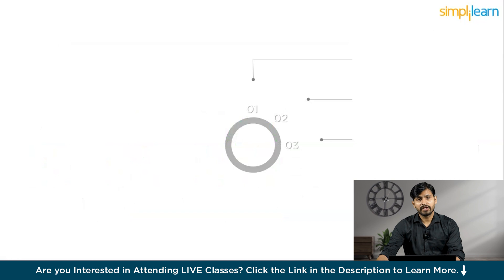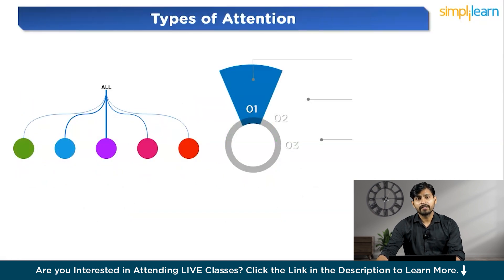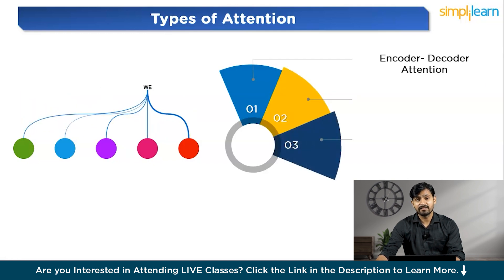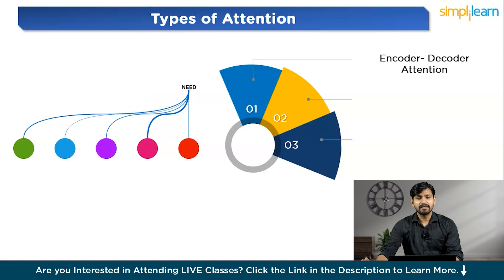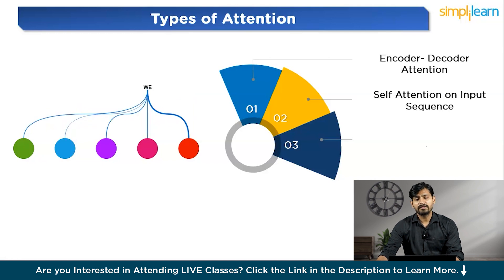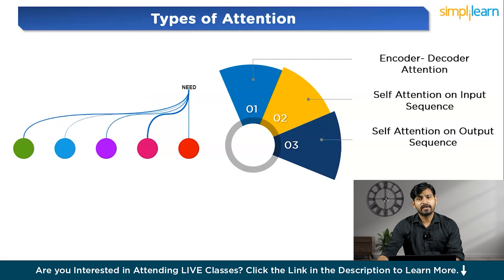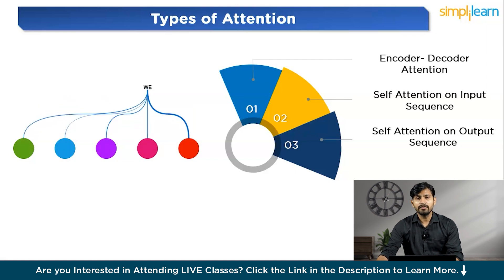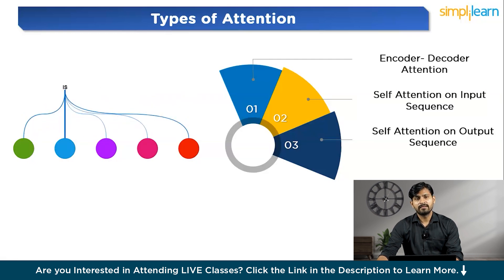Let us understand the three types of attention in Transformers. The first is encoder-decoder attention, which focuses on the relationship between the input (an English sentence) and the output (a translated French sentence). It helps the model align input and output, making translation more accurate. The second is self-attention on the input sequence, which attends to all words in the input sequence and helps the model understand the context of each word in relation to others in the same sentence. The third is self-attention on the output sequence — while generating output, the model uses this attention to look at words it has already predicted and prevent it from looking at future words. This is done using masking, where only certain words are visible at each step.